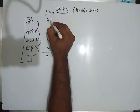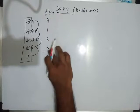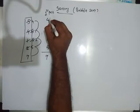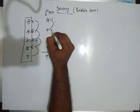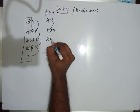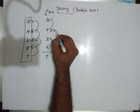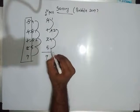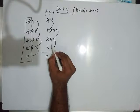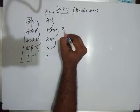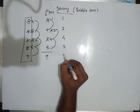We start comparing. 4 is greater than 1, so swap. I bring 1 here, I bring 4 here. I compare 4 with 2: 4 is greater than 2, so I swap. Then I compare 4 with 5: 4 is not greater than 5, so I don't swap. Second pass over. The result of the second pass is: 1, 2, 4, 5, 7.